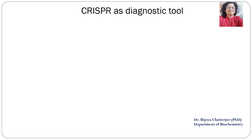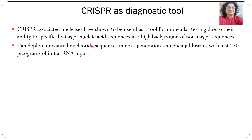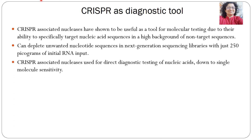These breaks can lead to gene activation or introduction of heterologous genes through non-homologous end-joining or homologous recombination in many laboratory model organisms. CRISPR is also an important diagnostic tool. CRISPR-associated nucleases have shown to be useful for molecular testing due to their ability to specifically target nucleic acid sequences in a high background of non-target sequences. It can deplete unwanted nucleotide sequences in next-generation sequencing libraries with just 250 picograms of initial RNA input.